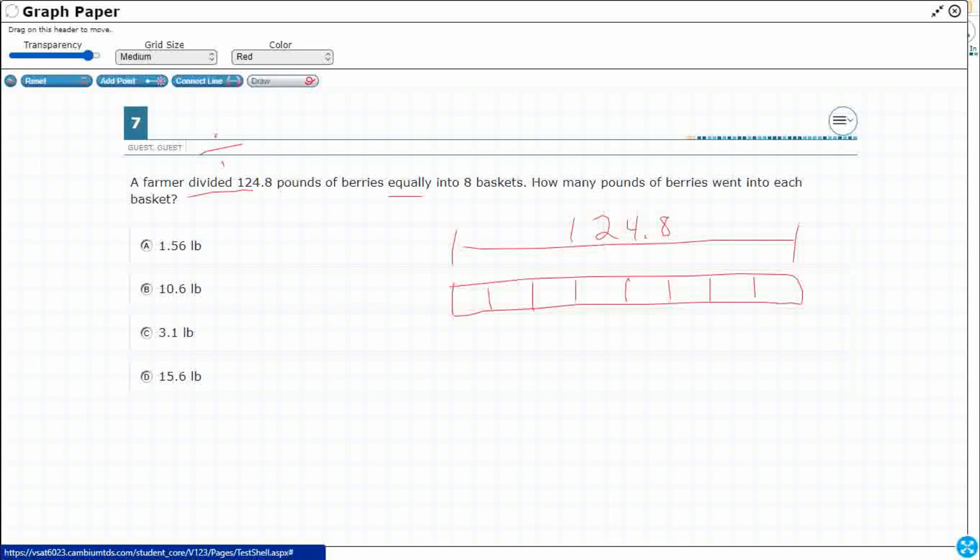So how do we do that? What we're going to do is we're going to pretend like it's long division. So let's go 8 into, and I'll use these little squares to kind of keep me going, 124.8.